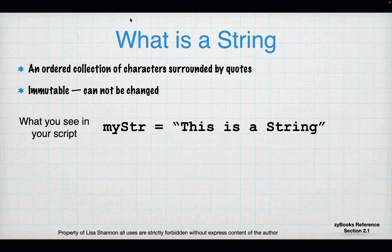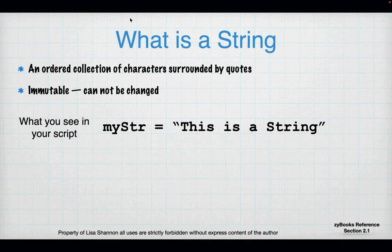Let's take a look at an example. When you see in your script 'Meister', that is a variable — we know it's a variable because it's on the left-hand side of a single equal sign. On the right-hand side of the single equal sign we have the value, and in this example the value of Meister is a string. The string contains the characters 'This is a string', and you will see it has an opening double quote and a closing double quote — those quotes are balanced.